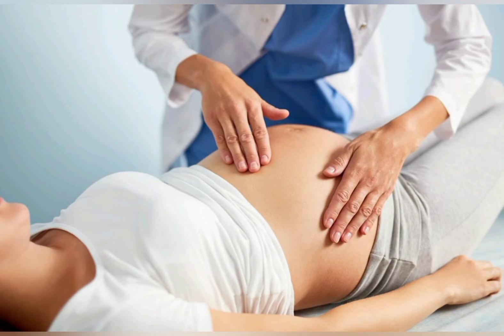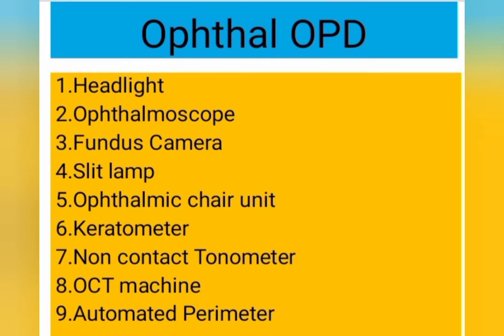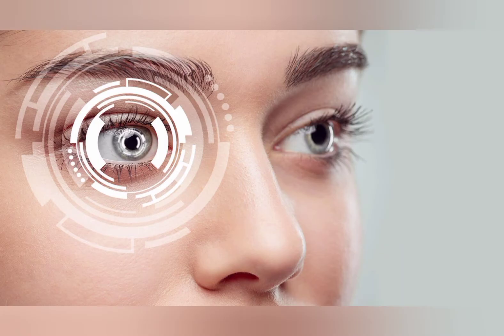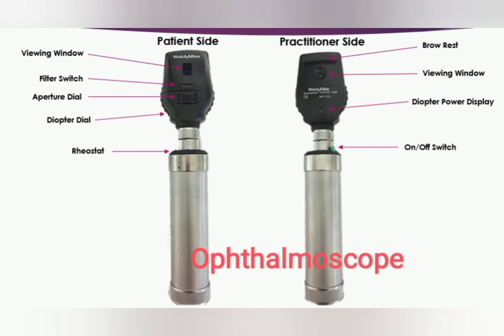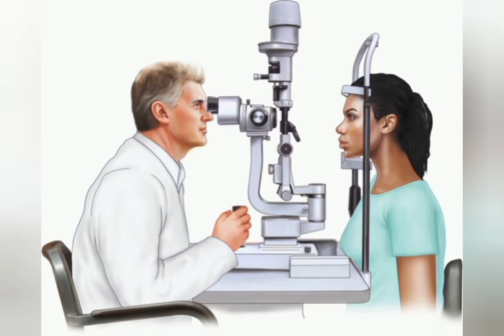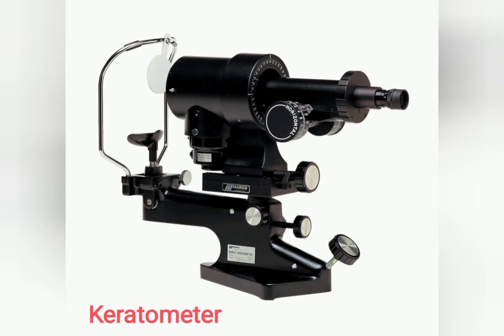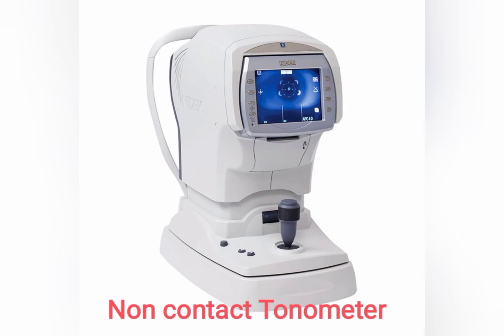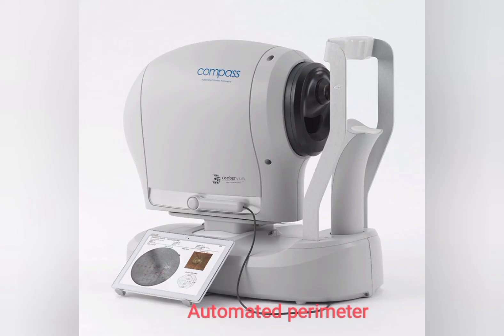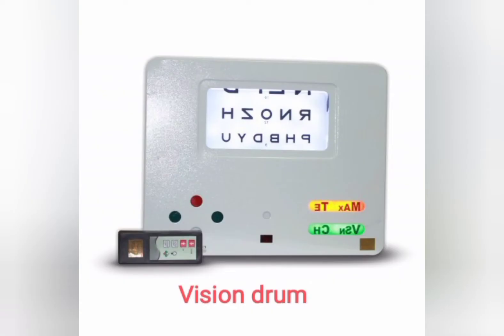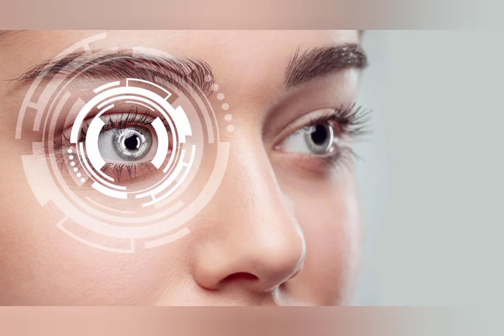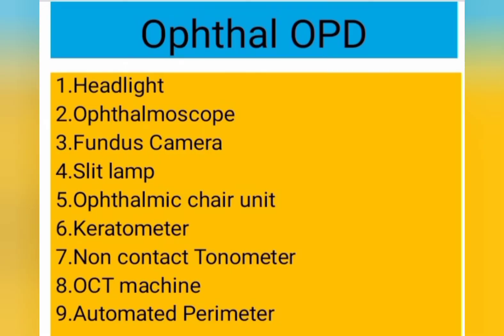Our next OPD is Ophthalmology OPD — the place where eye patients are seen. This OPD needs many equipments: Ophthalmoscope, Fundus Camera, Slit Lamp, Ophthalmic Chair Unit, Keratometer, Non-Contact Tonometer, OCT Machine, Automated Perimeter, and Vision Drums. As eyes are the most delicate organs of our body, for different types of analysis and diagnosis, we need these many equipments in Ophthalmic OPD.